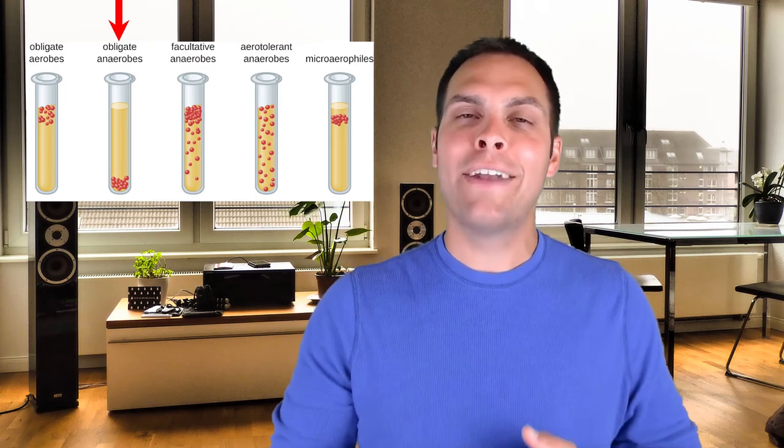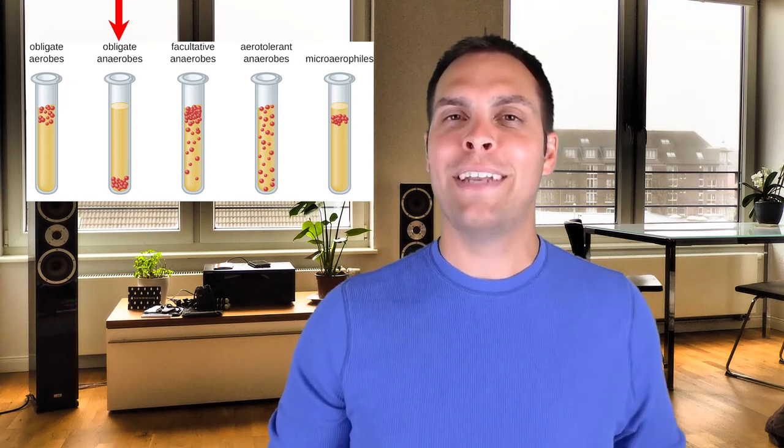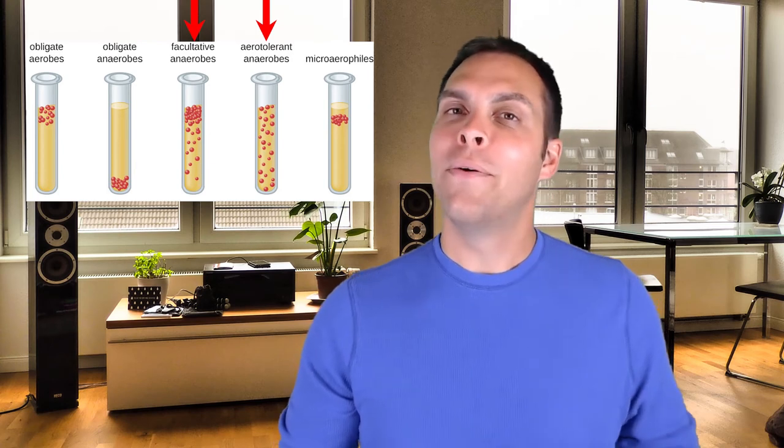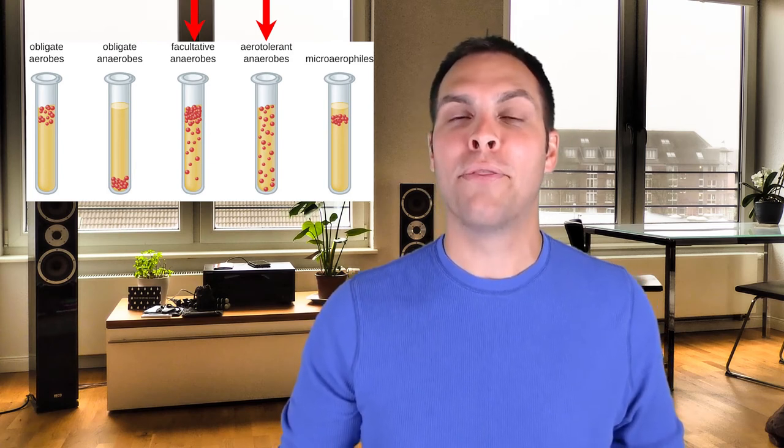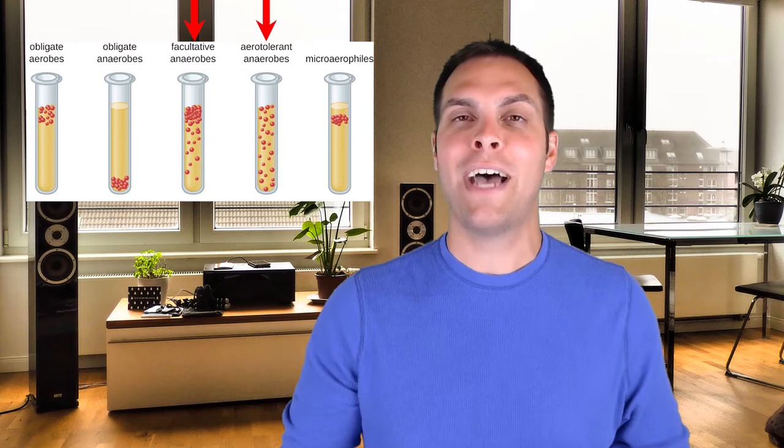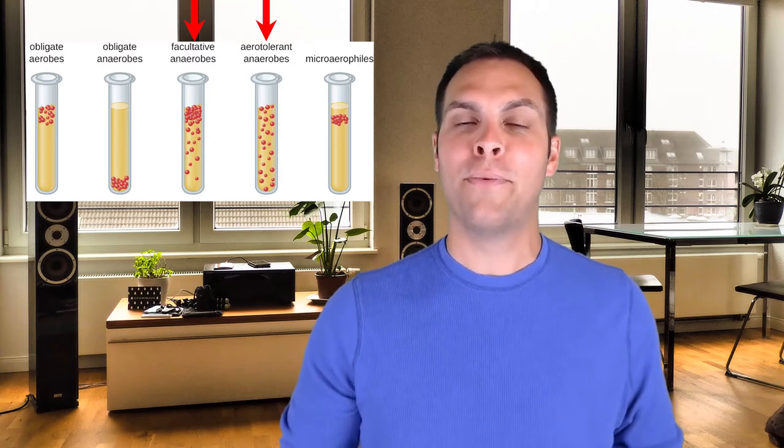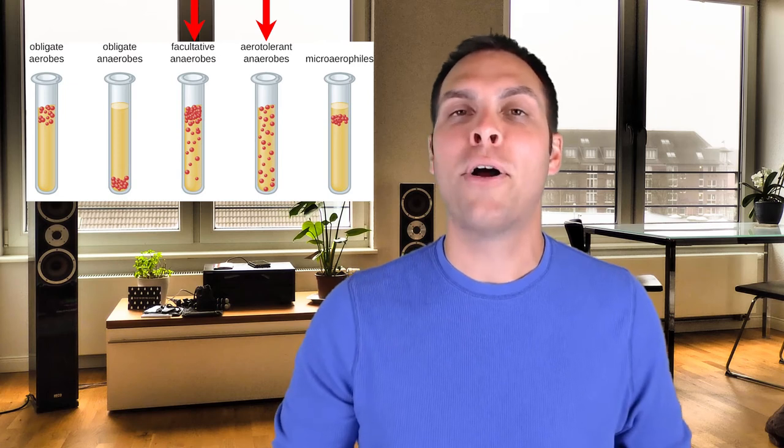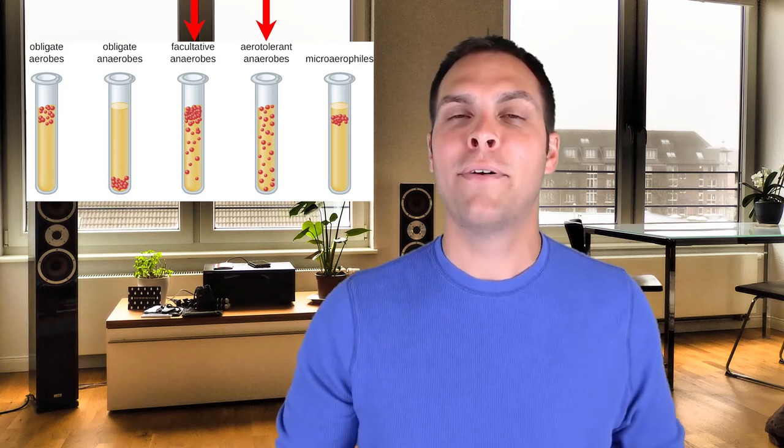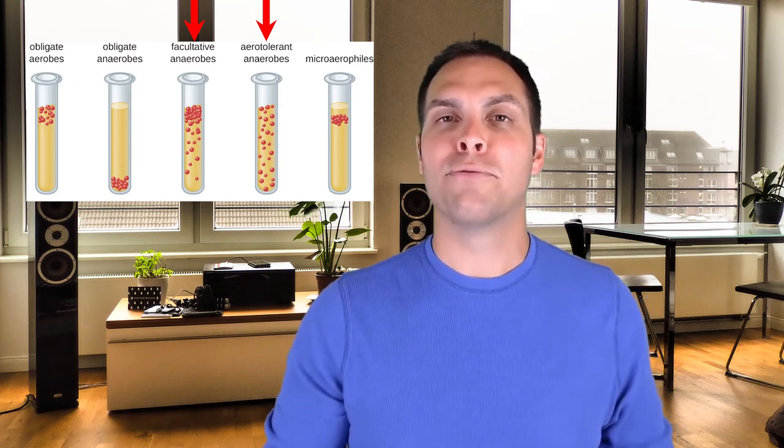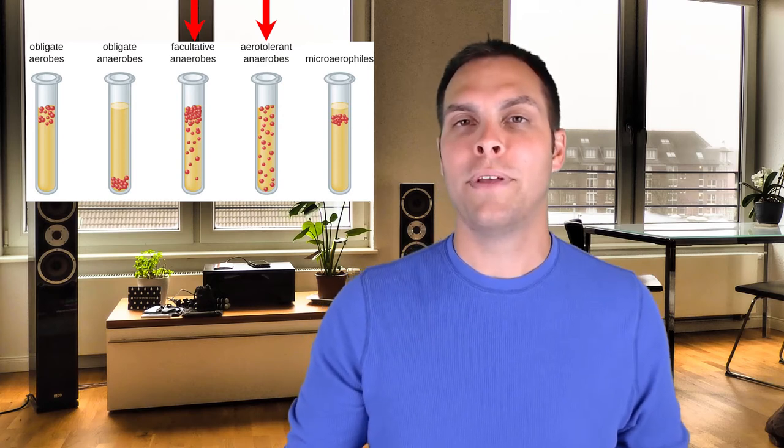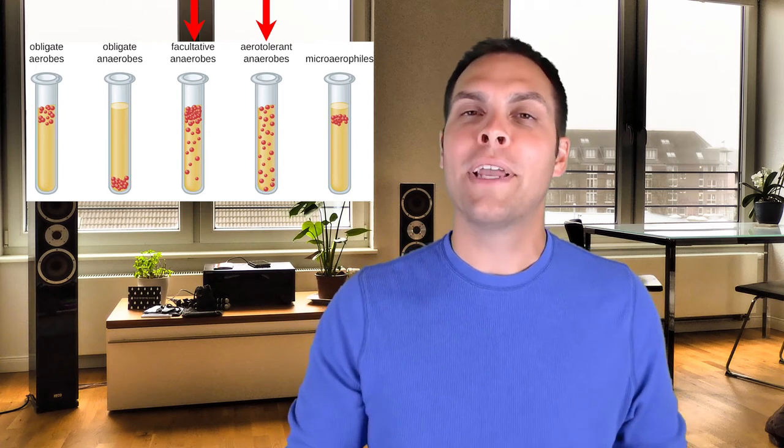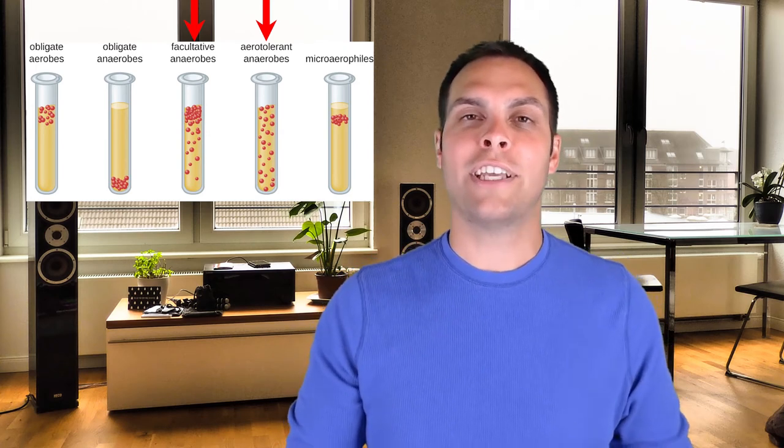So aerobes are up at the top. Anaerobes are at the bottom. But what if you have an aerotolerant anaerobe or a facultative anaerobe? Well, the answer is simple. They are going to grow throughout the entire tube. They will grow all the way up the top and all the way down at the bottom. And the reason why is they don't need oxygen to survive, but oxygen doesn't harm them. So facultative anaerobes, as well as the aerotolerant anaerobes will grow throughout the entire volume of the tube. And depending on the results of this can tell you what the particular microbe you're growing, what its relationship with oxygen actually is.